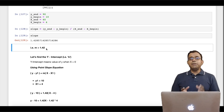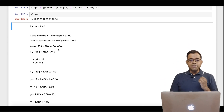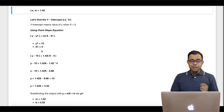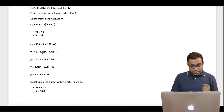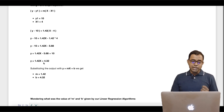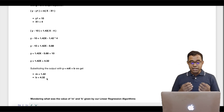Now out of two variables m and b, we have m. Let's find b. To find b we use the point-slope equation: y − y1 = m(x − x1). We know m, x1, and y1. Substituting x1 and y1 we get: y − 10 = 1.42(x − 4). Expanding the equation, through simple mathematics, we finally arrive at y = 1.42x + 4.32. Substituting this into our formula, m is 1.42 and b is 4.32. We got both m and b — our slope as well as our intercept.